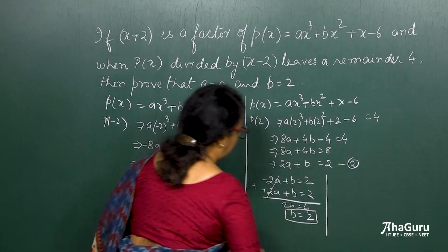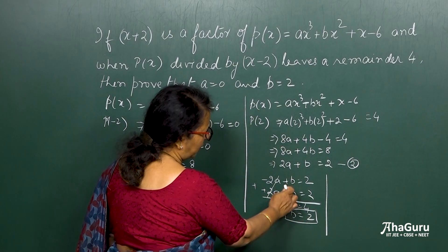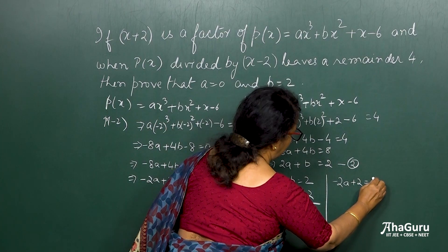And then of course we can do substitution of b here. B is equal to 2. So if any of the equation I can choose, so if I choose the first equation, 2a plus 2 is equal to 2.